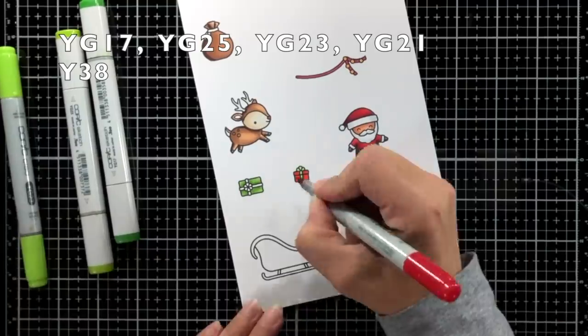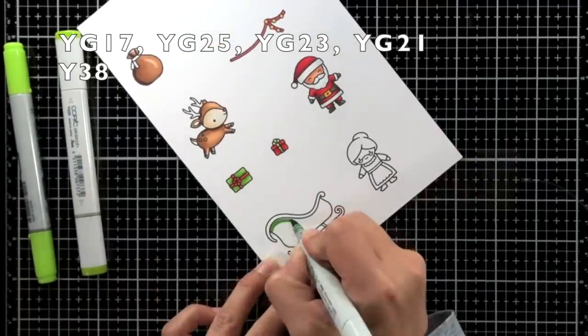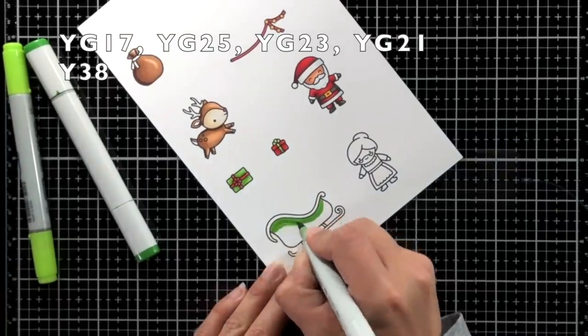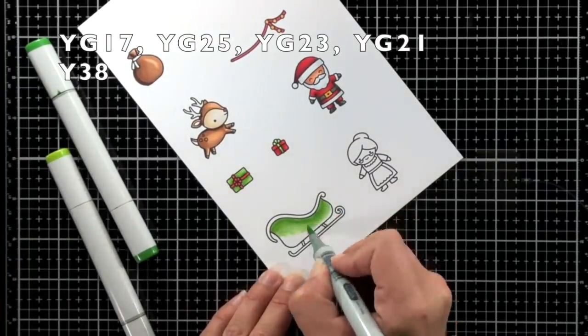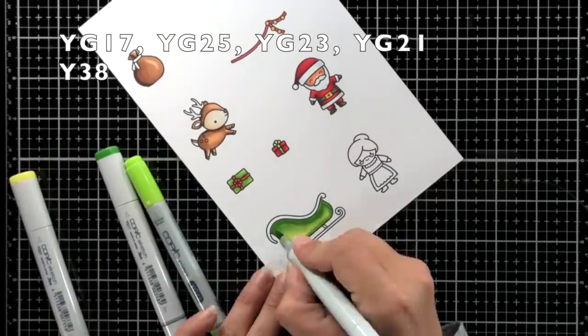Now for the greens I'm going to be using YG17, 25, and 23. On the sleigh here I did add in a YG21 for a nice bright highlight.